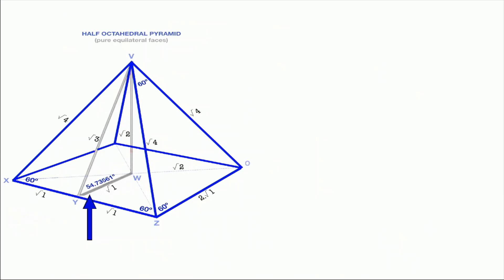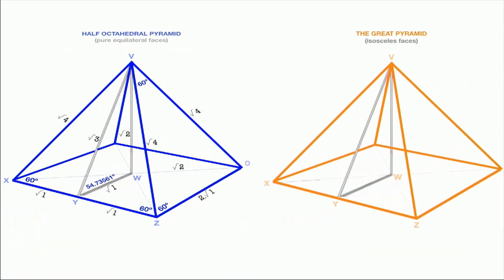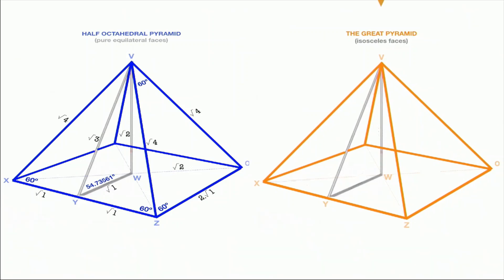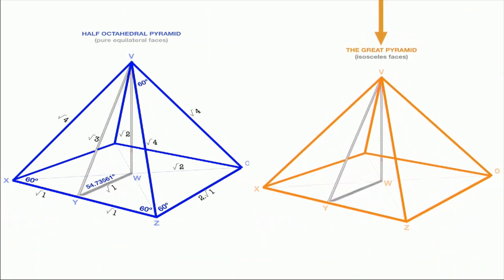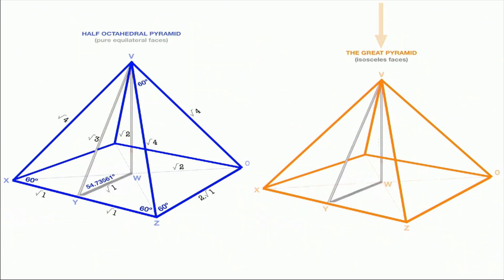The one that we know about is the Great Pyramid. This half octahedral pyramid I just showed you, here's the Great Pyramid—it's like a squashed down version of that with these measurements based on cubits: 440 cubit base, 280 cubit height.